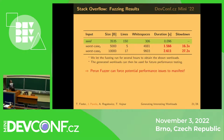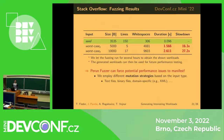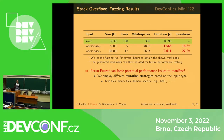Perun's fuzzer can force potential performance issues to manifest — code that works fine until you scale it or reuse it in another module. Perun uses different mutation strategies based on input type: text files have different mutation rules than binary files. There's also support for domain-specific rules — if you have a specific input format, you can develop your own mutation rules that are likely to cause trouble.